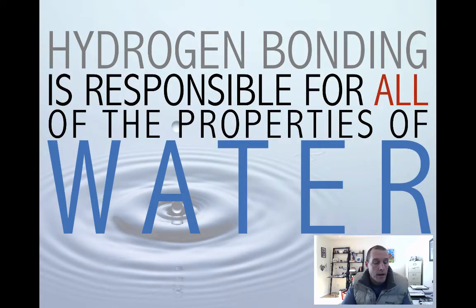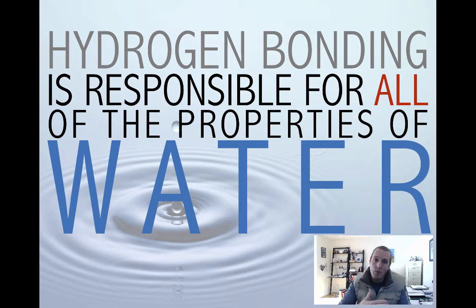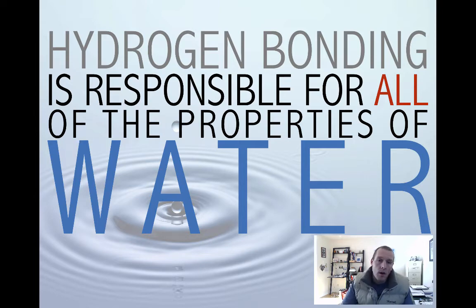I can't emphasize enough how important it is that you understand what hydrogen bonds are, how they form, and that you can explain it from the most basic principles of electronegativity. We have a practice writing assignment in Canvas that will explore how hydrogen bonds form. You want to start with the most basic principle — electronegativity of oxygen and hydrogen — build up to a polar water molecule, then to how opposite partial charges attract, and finally to hydrogen bonding. Hydrogen bonding is responsible for all the properties we see in water and many properties of other molecules.